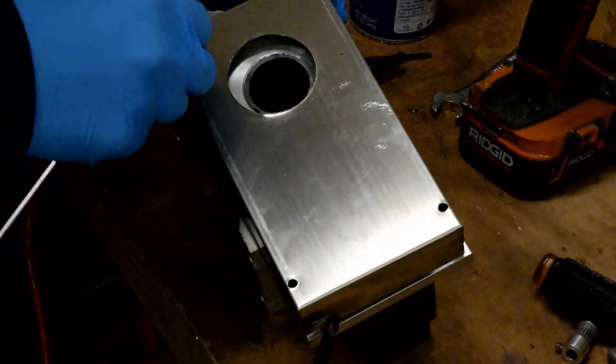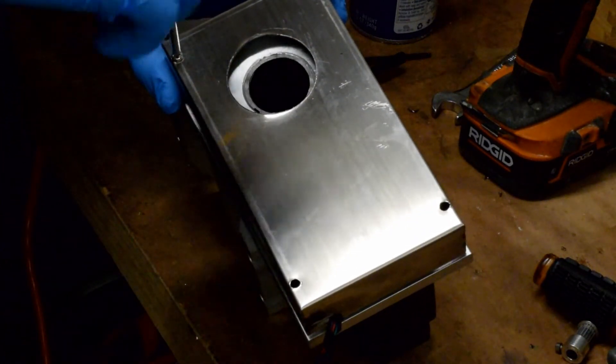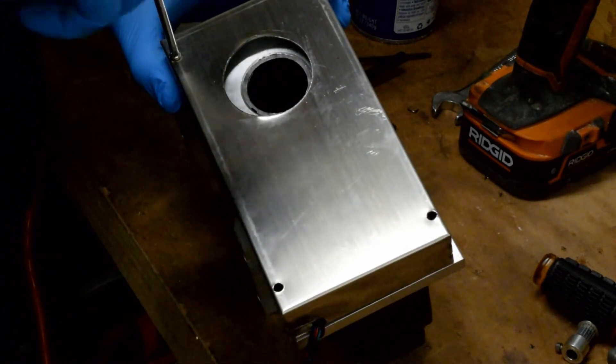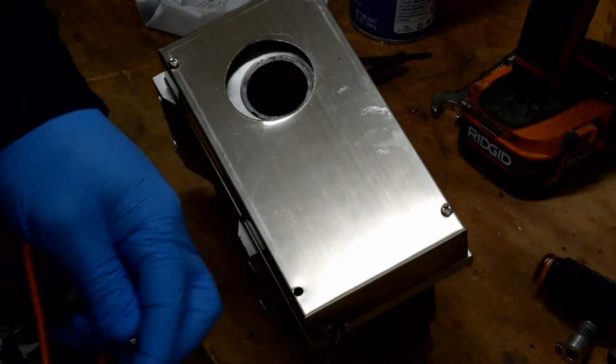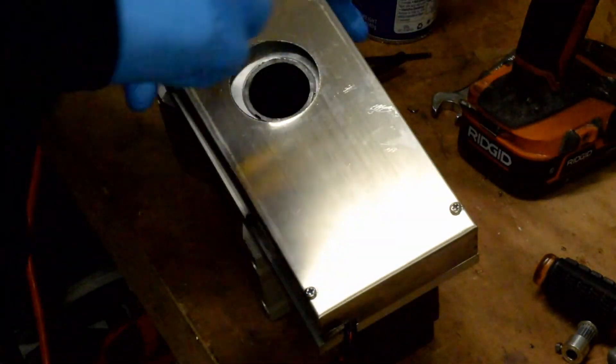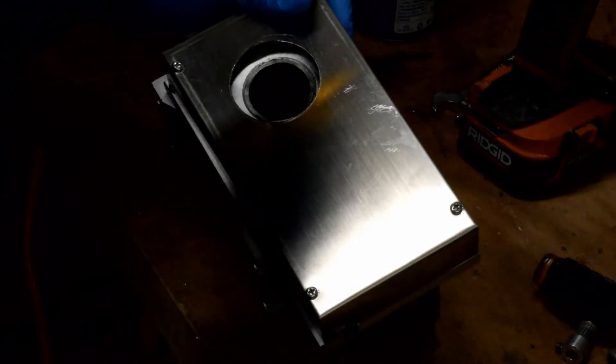But when you're working with it, you'll see how much slop is in these holes that's in the guard. So you can't go wrong by oversizing it. And what you can see now is we've got a nice guard for that timing belt inside.